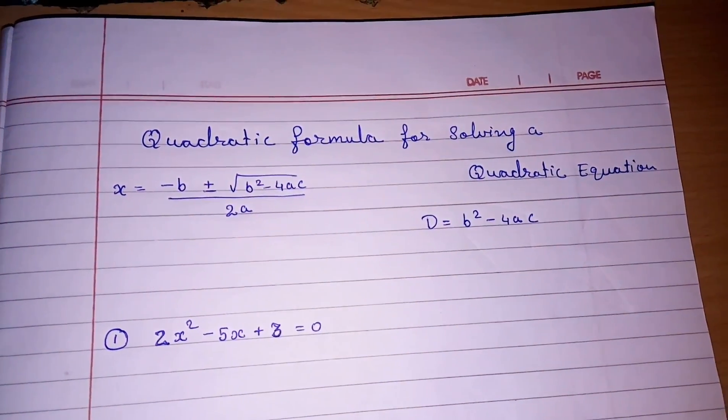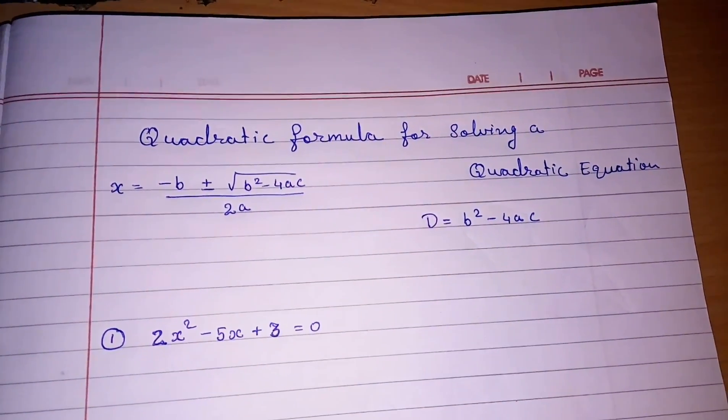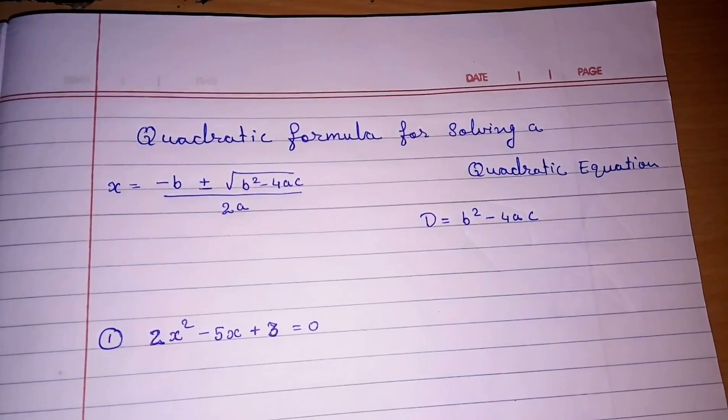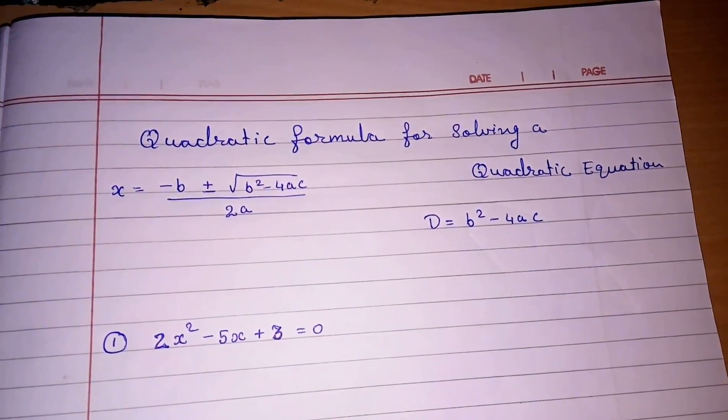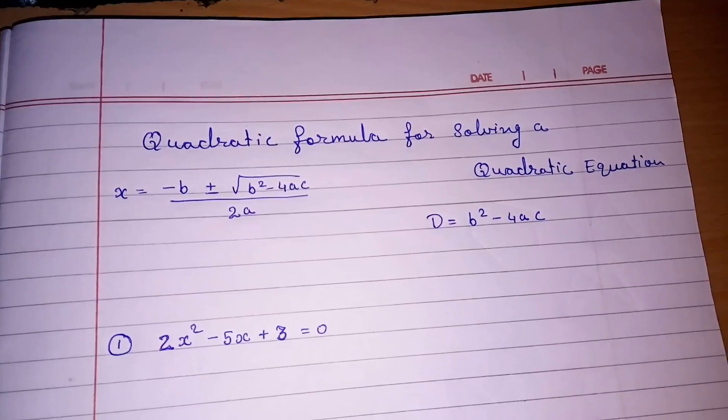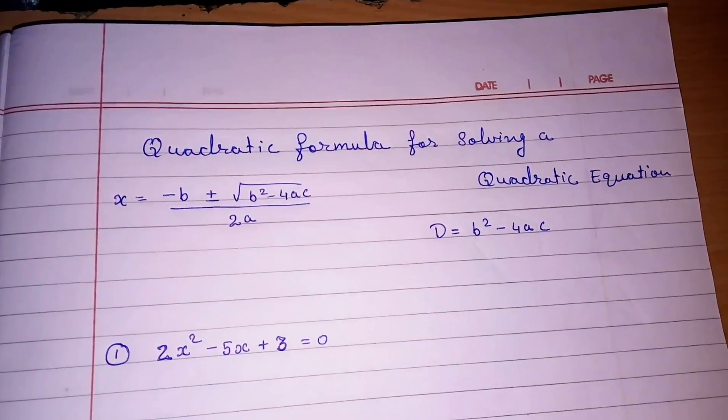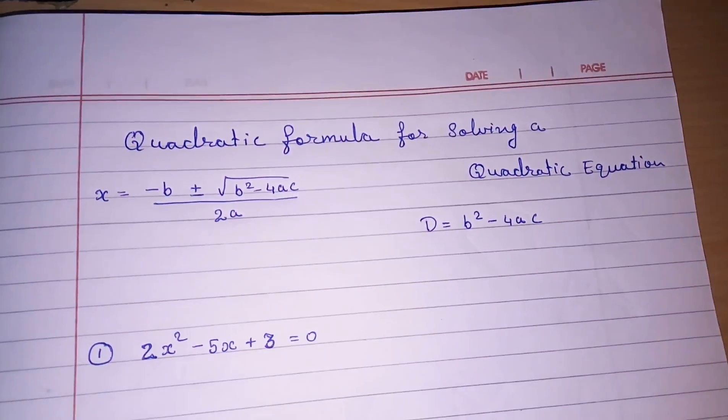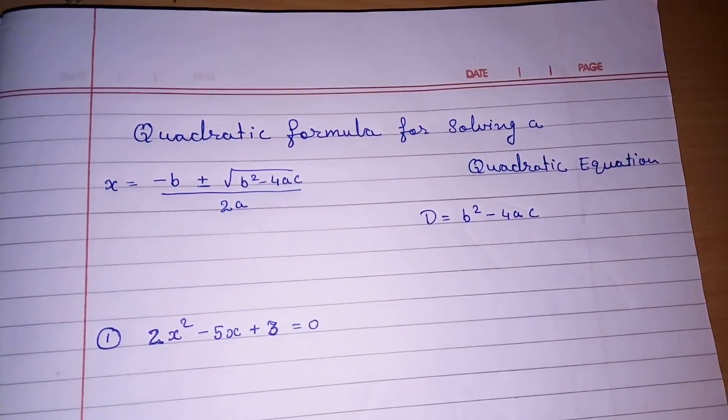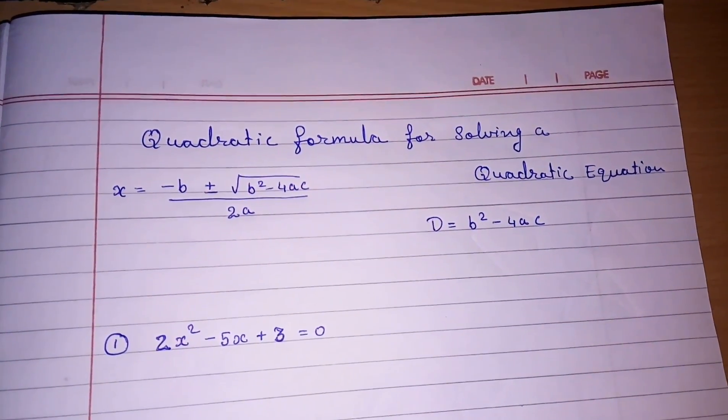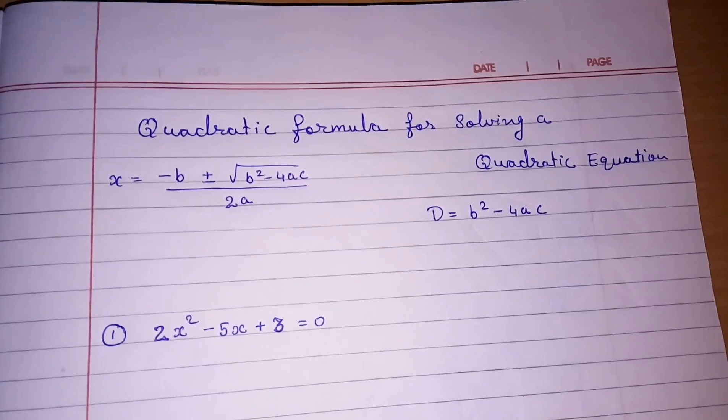We know there are three methods for solving a quadratic equation. One is splitting the middle term, second is completing the square method, and the third one is quadratic formula. I have made videos on splitting the middle term and completing the square method also. This is the third method which I am going to explain you right now.